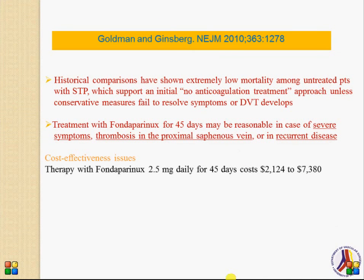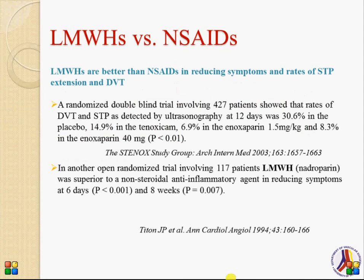However, concerns were expressed by several authors who noted that historical comparisons have shown extremely low mortality among patients with untreated superficial thrombophlebitis, generally supporting an initial non-anticoagulation approach unless conservative measures fail or DVT develops. They expressed the opinion that fondaparinux for 45 days may be reasonable in cases of severe symptoms, thrombosis of the proximal great saphenous vein, or recurrent disease, and raised concerns about cost-effectiveness, as treatment with fondaparinux 2.5 mg daily for 45 days is costly.